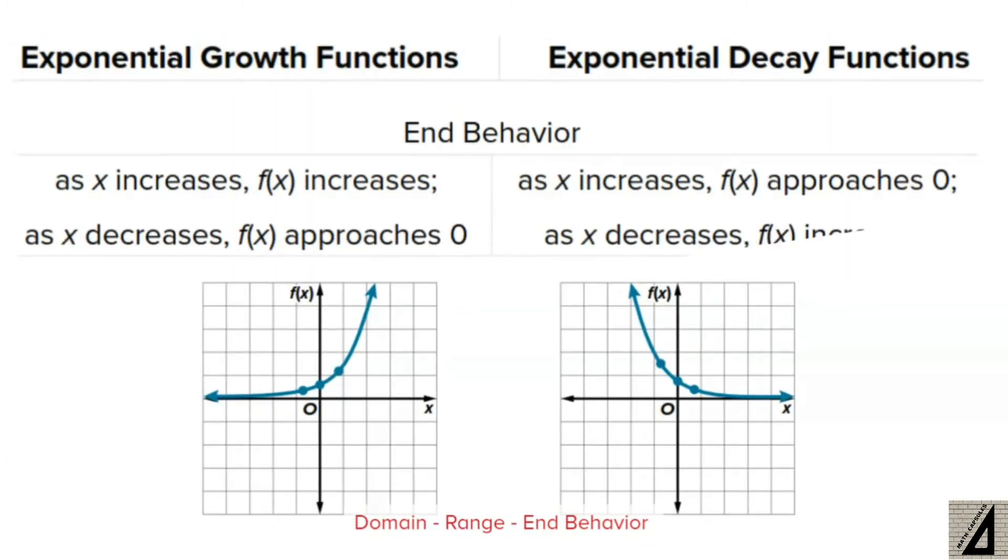The end behavior of the exponential growth function: as x increases, f of x increases, as you see here from the graph. Also as x decreases, f of x approaches 0. For the exponential decay, as x increases, f of x approaches 0, and as x decreases, f of x increases.